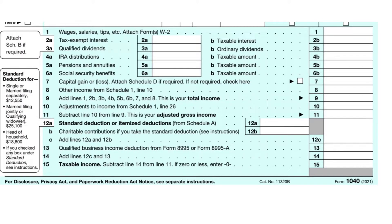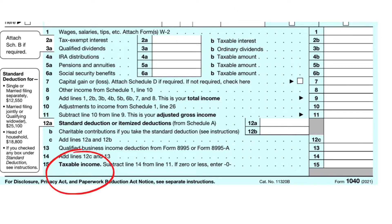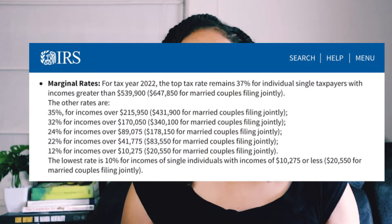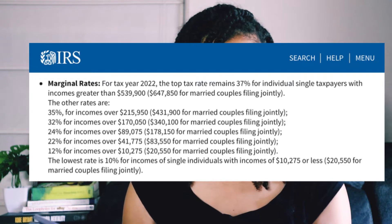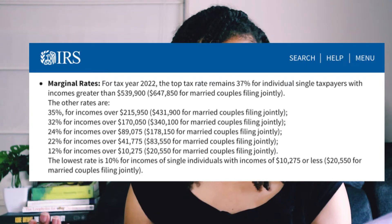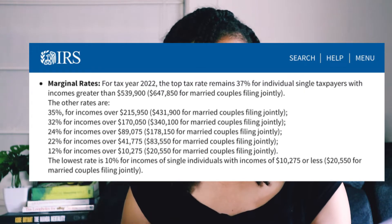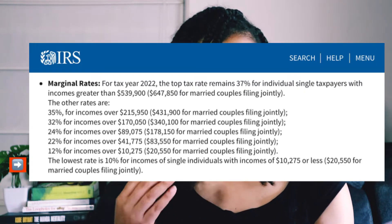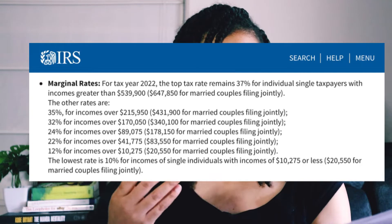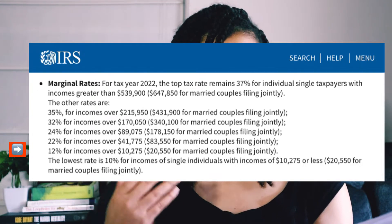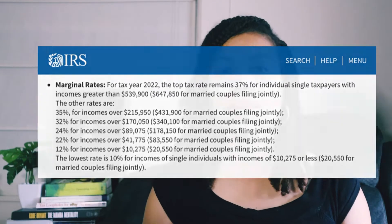Interest income is normally taxed at your ordinary income tax rate. When interest and other types of investment income are taxed at the ordinary rate, it means this income doesn't get special tax treatment. Taxable interest is added to your wages, retirement income, and other ordinary income to arrive at your taxable income, which is then subject to marginal tax rates. For 2022, if your taxable income is $50,000, then $10,275 is taxed at 10%, up to $41,775 is taxed at 12%, and the remainder at 22%.